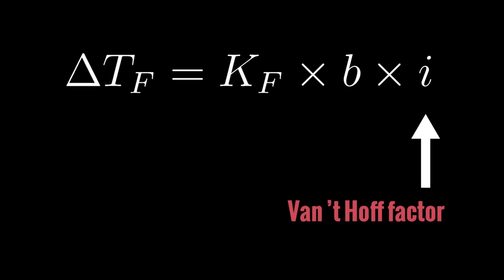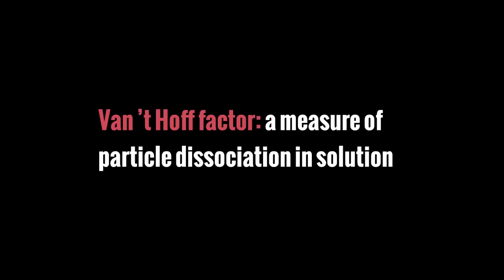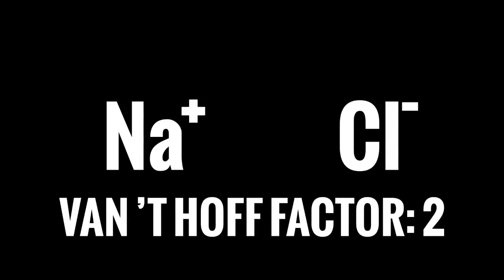Then we have I, which is the van't Hoff factor. Van't Hoff factor is a measure of particle dissociation in the solution. And what that means is if we have something like NaCl, for example, and we dissolved NaCl in water, it would not remain as NaCl. It would split into two of the ions, Na plus and Cl minus. And since we have both ions, there are two of them, the van't Hoff factor is 2.